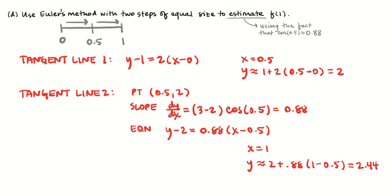Now, before I go back, if we're taking two steps of equal size, one quick check to make sure we're doing it right is that when we plug in to get our approximations both times, this delta x needs to be equal — we need to be multiplying the slope by the same number each time. Notice both times I'm multiplying the slope by a half, so that's a good sign. If you're multiplying by two different numbers, it must mean you've done something wrong.